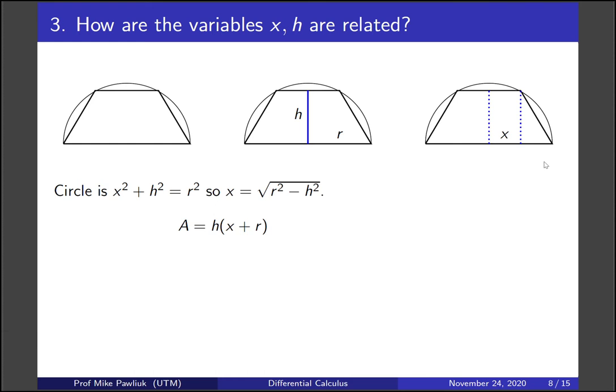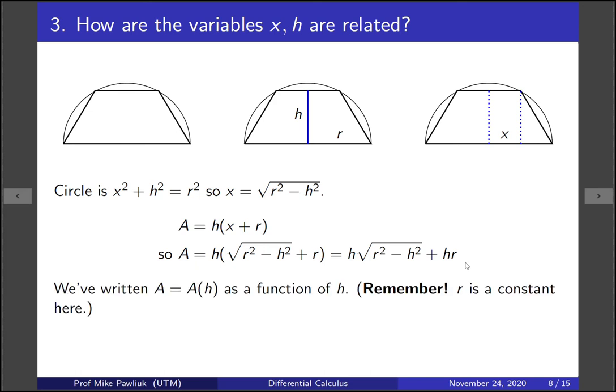And now we can substitute this back into the area formula we just found to have a formula just with h's. So starting with our area formula let's get rid of that x. So we've plugged in this value of x and then it'll be handy for us to expand it out so we'll write it like this. So the thing that's important for us is that we've written our area formula just in terms of h's and r's. h is our variable and r is a constant that's not changing.